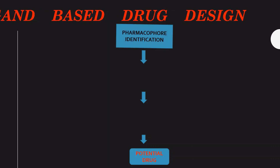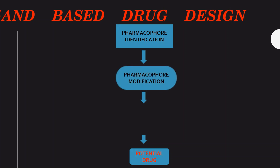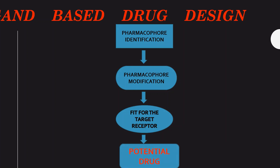In ligand-based drug design, the first step is pharmacophore identification, and the second step is pharmacophore modification — to determine whether the potential drug fits or not. In ligand-based drug design, the drug is designed based on the type of ligand features. We also need to maintain the hydrophilic-lipophilic ratio.